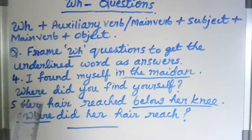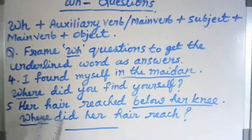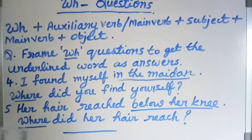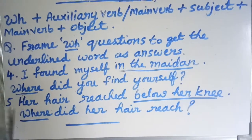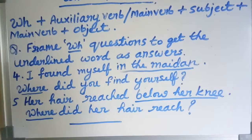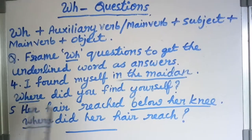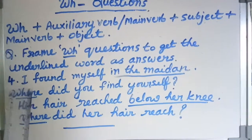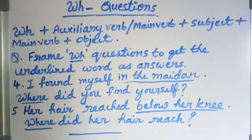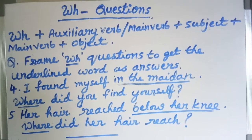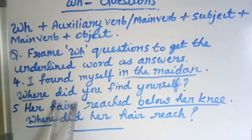One more rule: if there is no auxiliary verb, we use do, does, or did. We use 'do' when the subject is plural — I, we, you, or they. We use 'does' when the verb is in the present tense and the subject is singular. We use 'did' when the verb is in the past tense. Thank you.